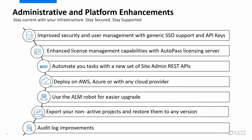On the administrative side, we improved our security and user management, introducing new support for single sign-on and API keys, which help you to control access to the ALM server from the API layer. We've also improved our license management with the integration of Autopass, our licensing server, which helps with better reporting capabilities and the ability to manage license pools. As an administrator, if you would like to automate some of your tasks, you can take advantage of our latest release of the site admin REST APIs, allowing you to automate day-to-day tasks such as user onboarding and other project maintenance tasks.